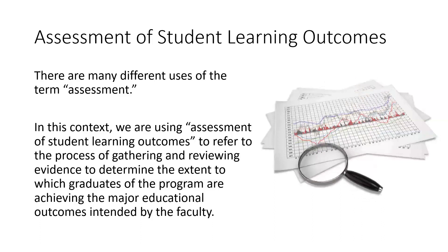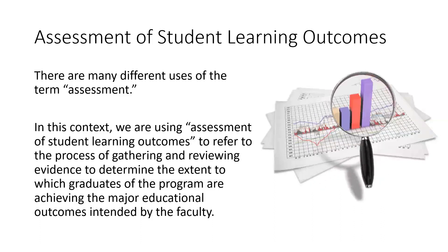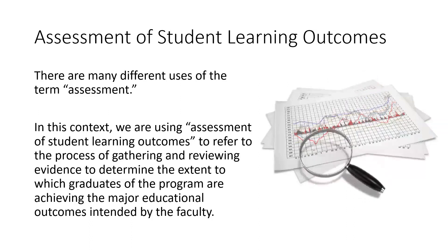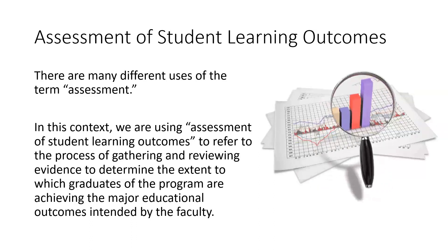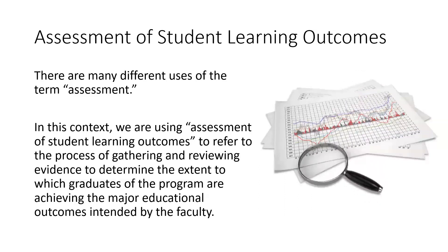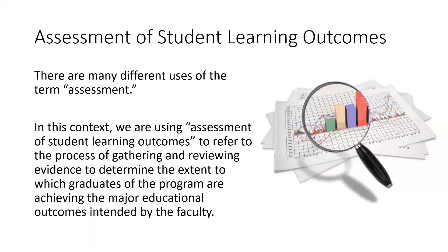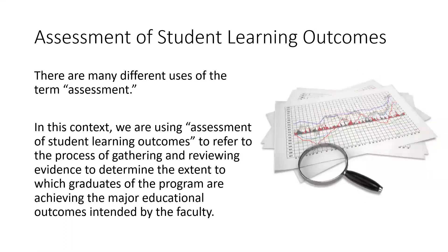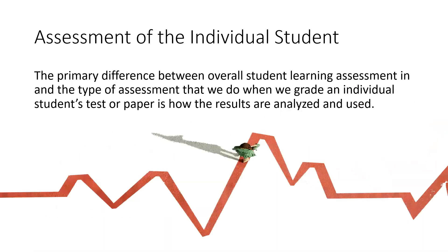Assessment of student learning outcomes refers to the process of gathering and reviewing evidence to determine that students are achieving the outcomes we intend. Several people asked what is meant by this after the convocation session. Student learning outcome assessment is different from assessment of the individual student. The primary difference is how the results are used, how they're analyzed, and how they fit into the overall data pool. Overall student performance data is ideally gathered and reviewed in aggregate for the purpose of evaluating how well the learning goals of the program are being accomplished and if improvements should be made.